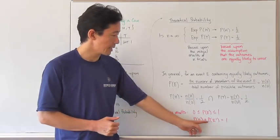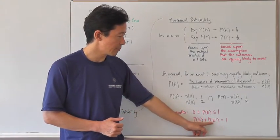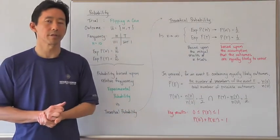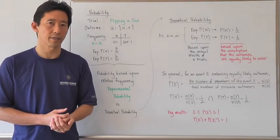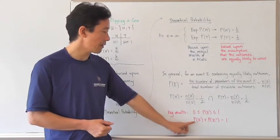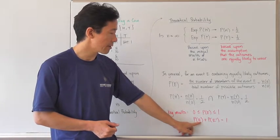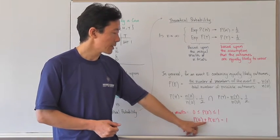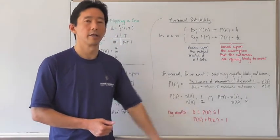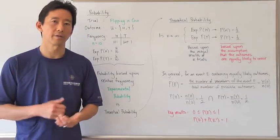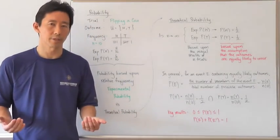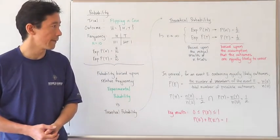We're also going to look at the probability of E prime, where E prime is the complementary event of E. If you have the probability of an event occurring plus the probability of that event not occurring, those two probabilities should add up to one, or 100%.